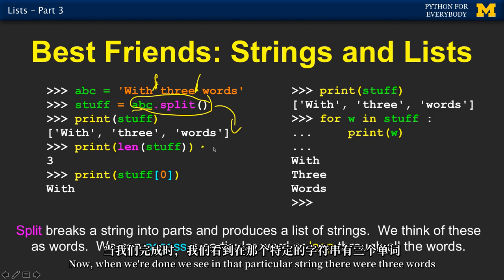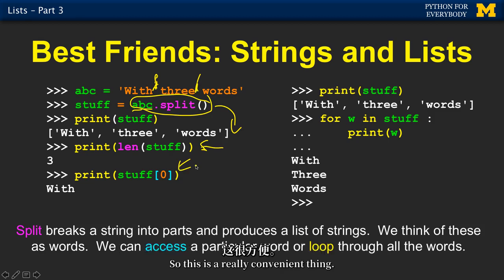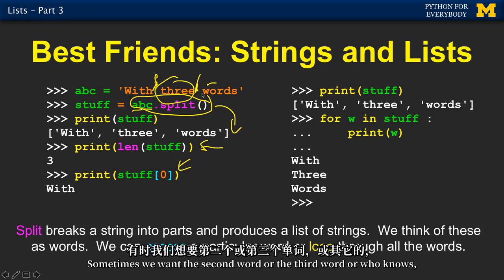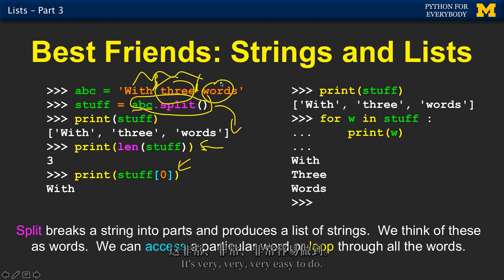When we're done, we see that in that particular string there were three words, and we can pull out the first word by printing stuff sub zero. Sometimes we want the second word, or the third word, or maybe we want to write a loop that loops through all the words. It's very, very easy to do.